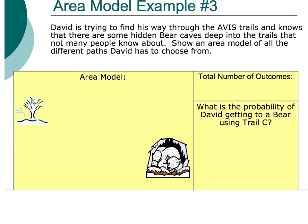The last area model we're going to look at involves some trails, and it's going to look very uneven — not as systematic as before. David is trying to find his way through the Avis trails and knows that there are some hidden bear caves deep in the trails. We'll show an area model of all the different paths David has to choose from.